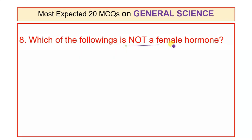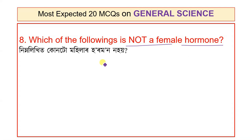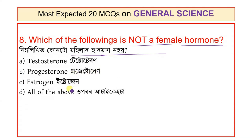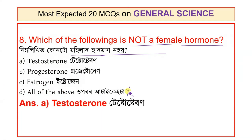Question 8: Which of the following is not a female hormone? Options: Testosterone, Progesterone, Estrogen. The answer is Testosterone. Progesterone and Estrogen are female sex hormones. Testosterone is a male sex hormone, so it is not a female hormone.